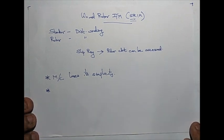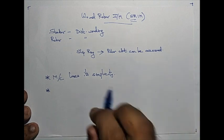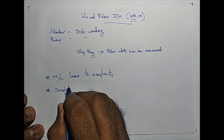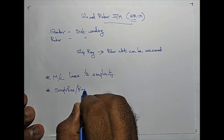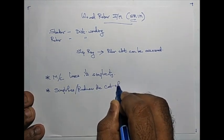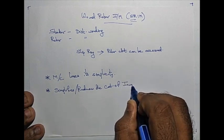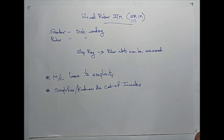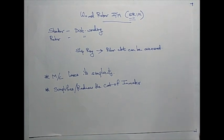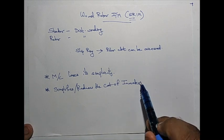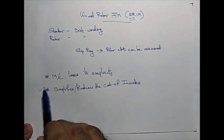So when we lose this simplicity, what advantage do we gain? First, we have one additional degree of freedom, which is the rotor side control. Other than that, it simplifies or reduces the cost of the inverter. How this works may not be clear right now — we will see it in a short while. Bear with me as I explain how this point is validated.